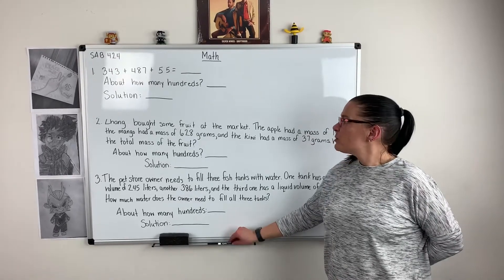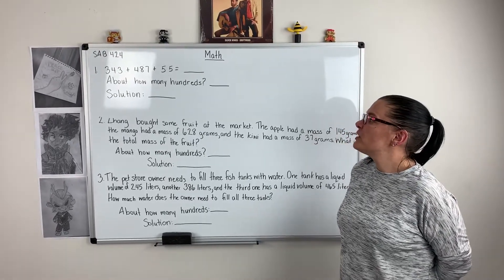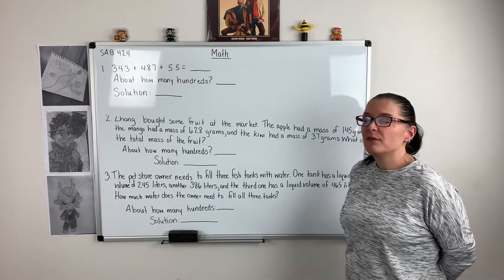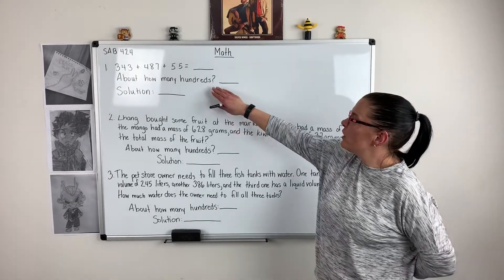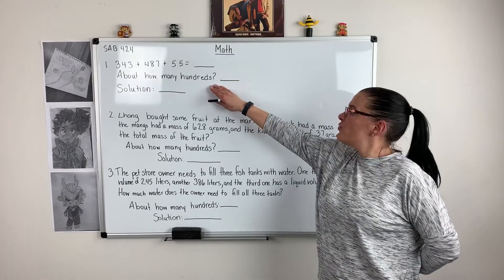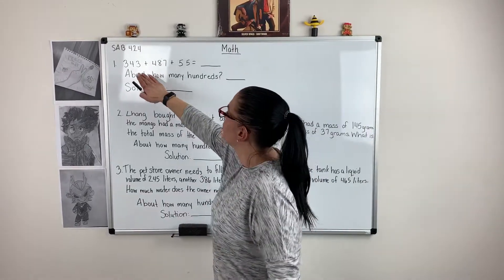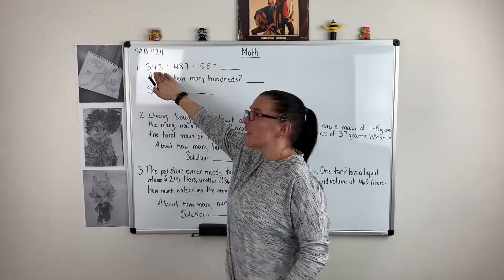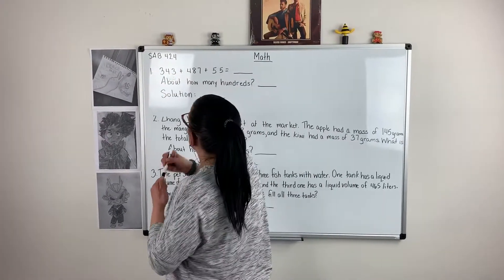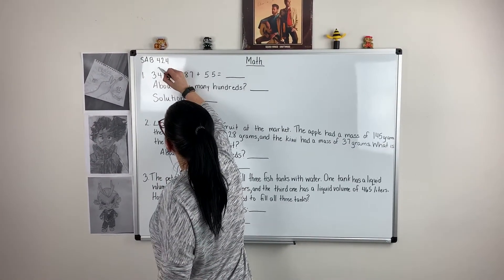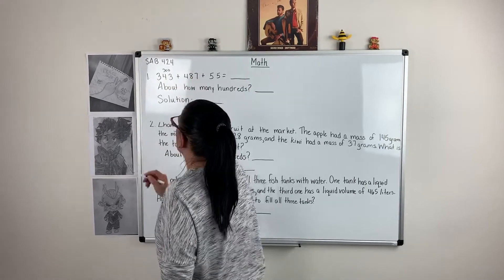I'm going to look at my first problem: 343 plus 487 plus 55. They want to know about how many hundreds. So I'm going to round my numbers to the nearest hundred. Looking at 343, I'm going to look at my tens place and I'm going to round down because it's a four in my tens place, and I'm going to say that's about 300.